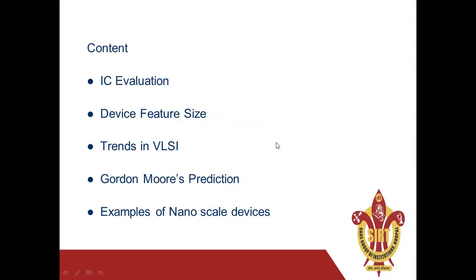These are our contents. First, we see IC evolution — we discuss the history regarding the innovation of transistors, MOSFETs, and integrated circuits. Next is device feature size, where we see how technology or features scale down to maximize the number of transistors on a single silicon wafer to increase chip performance. The third point is trends in VLSI, where we see VLSI design styles — we have various options: full custom and semi-custom — and we see the comparison chart also.